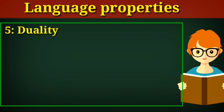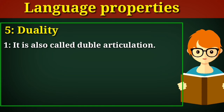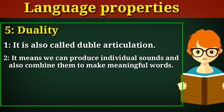Duality is also one of the properties of human language. It is also called double articulation. Basically, duality means that in human language we have a limited set of discrete sounds or phonemes, but these sounds can be combined in different ways to create an infinite number of words.